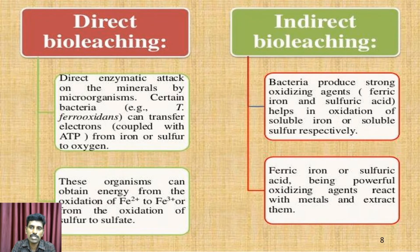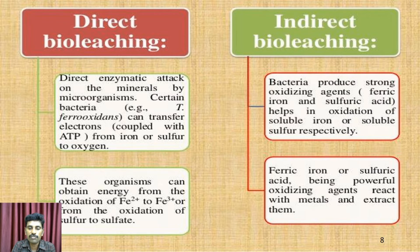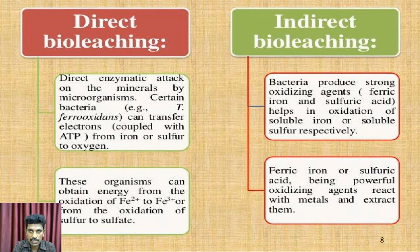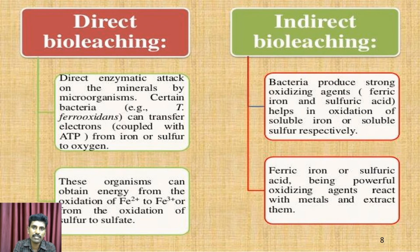In contrast, direct bio leaching involves direct enzymatic attack on minerals by microorganisms. In certain bacteria including Thiobacillus ferroxidans, electrons are transferred from iron or sulphur to oxygen atoms, enabling these organisms to obtain energy from the oxidation of ferrous to ferric. In indirect bio leaching, bacteria produce strong oxidizing agents including ferric ions and sulphuric acid, which help oxidize soluble iron or sulphur and extract particular metals.